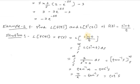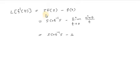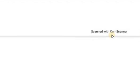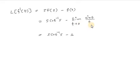Now we find Laplace of f'(t) using s·F(s) - f(0), where F(s) = cot⁻¹(s). To find f(0), substituting t = 0 into sin(t)/t gives 0/0, which is indeterminate. So we evaluate the limit as t tends to 0 of sin(t)/t, which equals 1. Therefore Laplace of f'(t) = s·cot⁻¹(s) - 1.